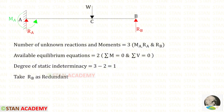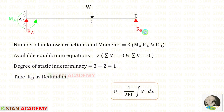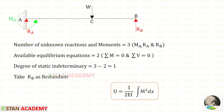Let us keep the prop reaction RB as a redundant. To find RB we are going to use the strain energy formula U = (1/2EI) × integral of M² dx. To find M we have to make sections in this beam. In this beam there are two different parts AC and CB, so we have to make two sections: one section in AC and one section in CB.